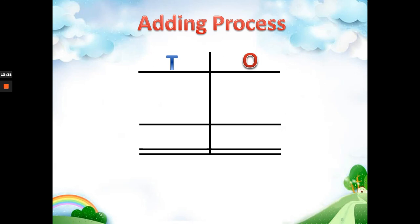For example we have 43: 3 is in the ones place (letter O) and 4 is in the tens place (letter T). For 22: the first 2 is in the ones place and the second 2 is in the tens place.